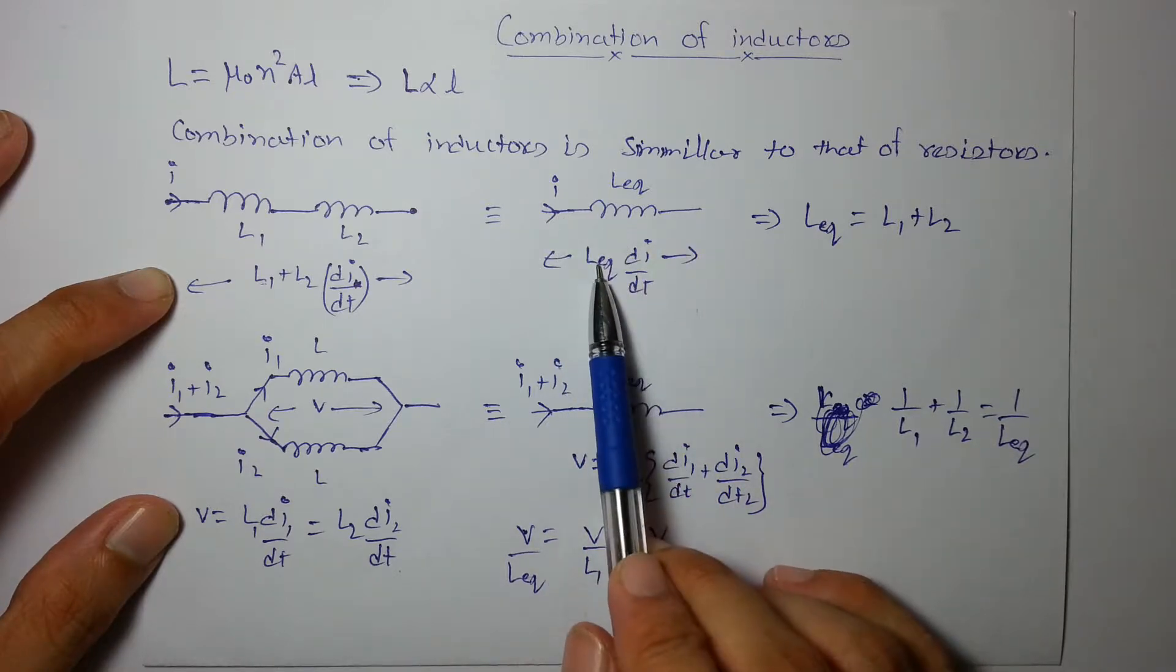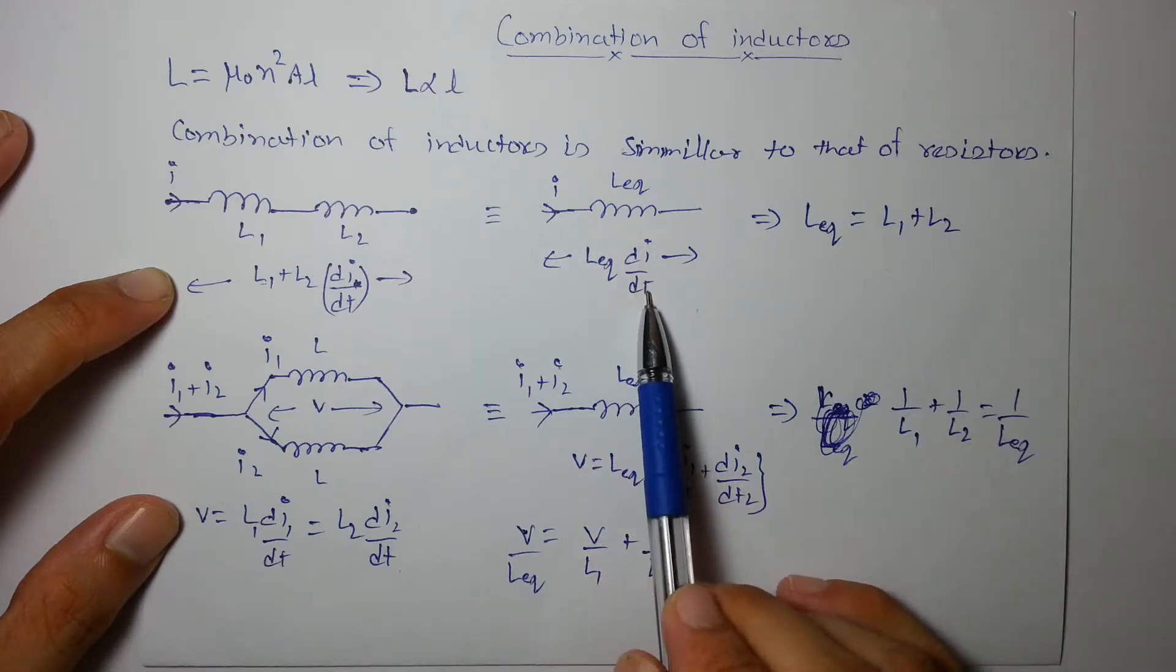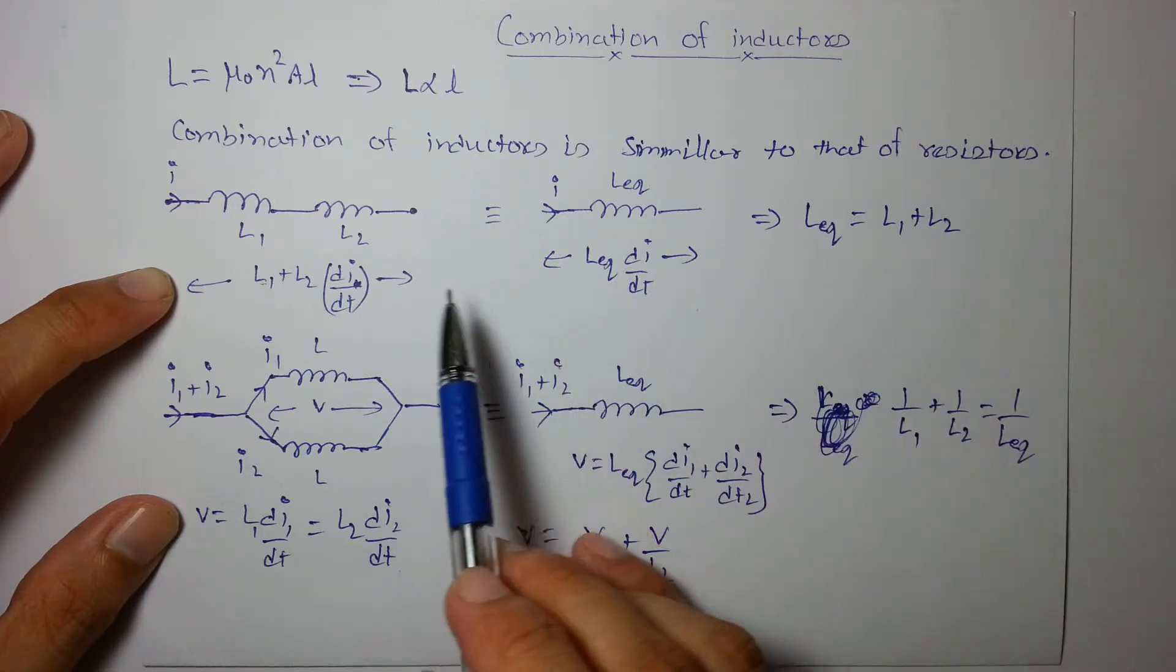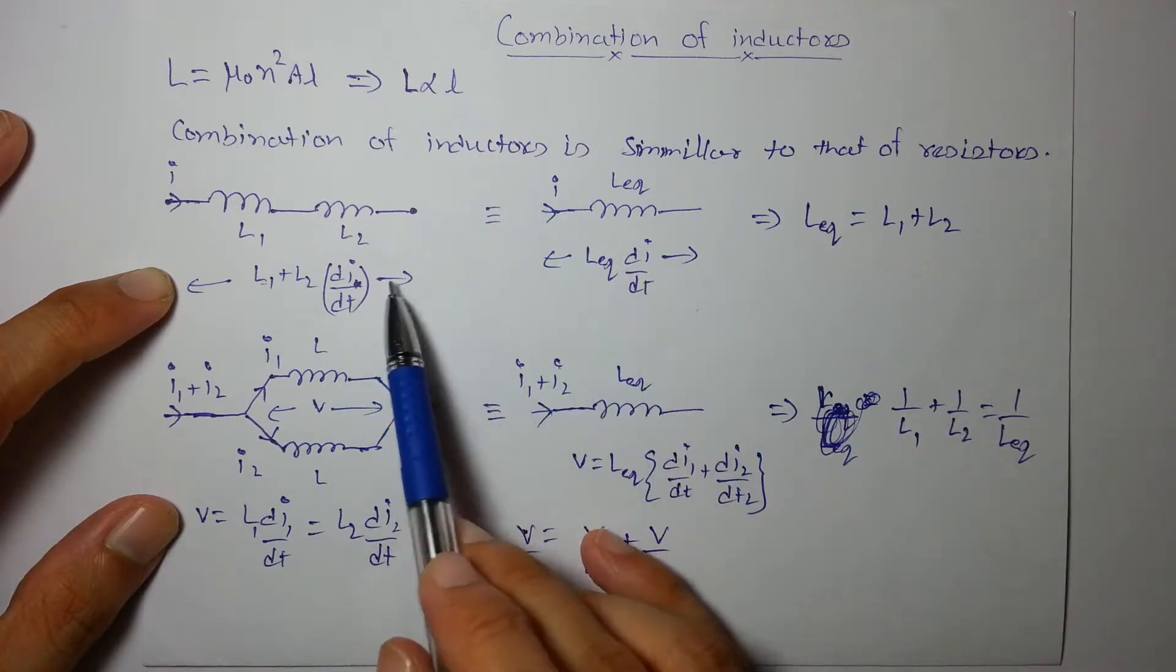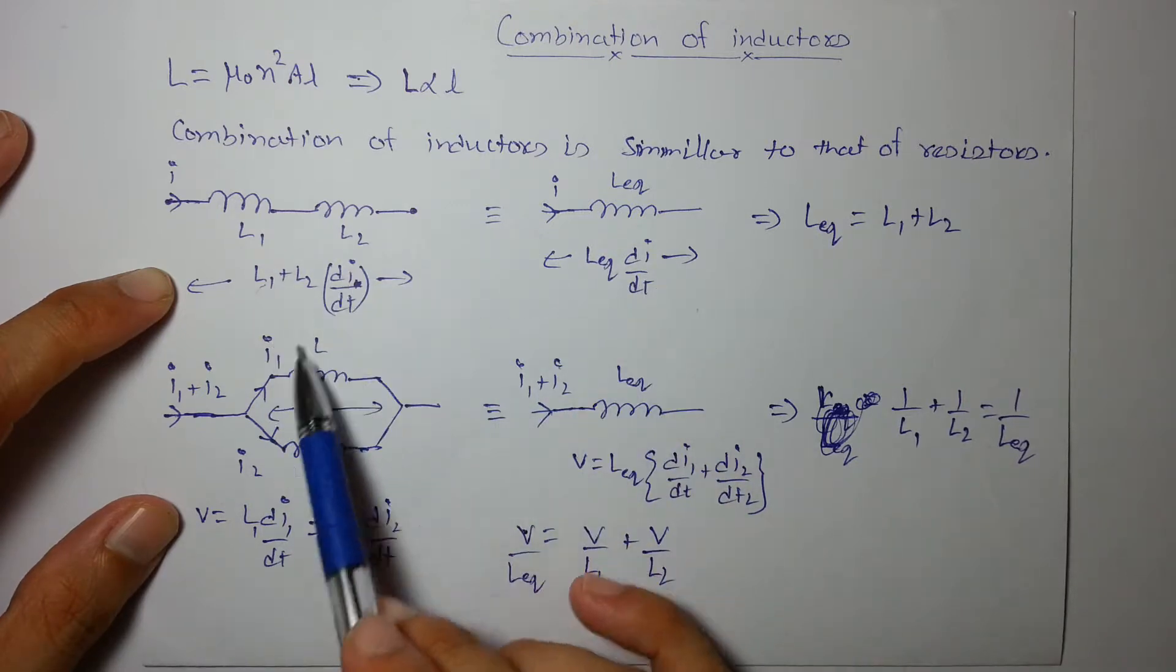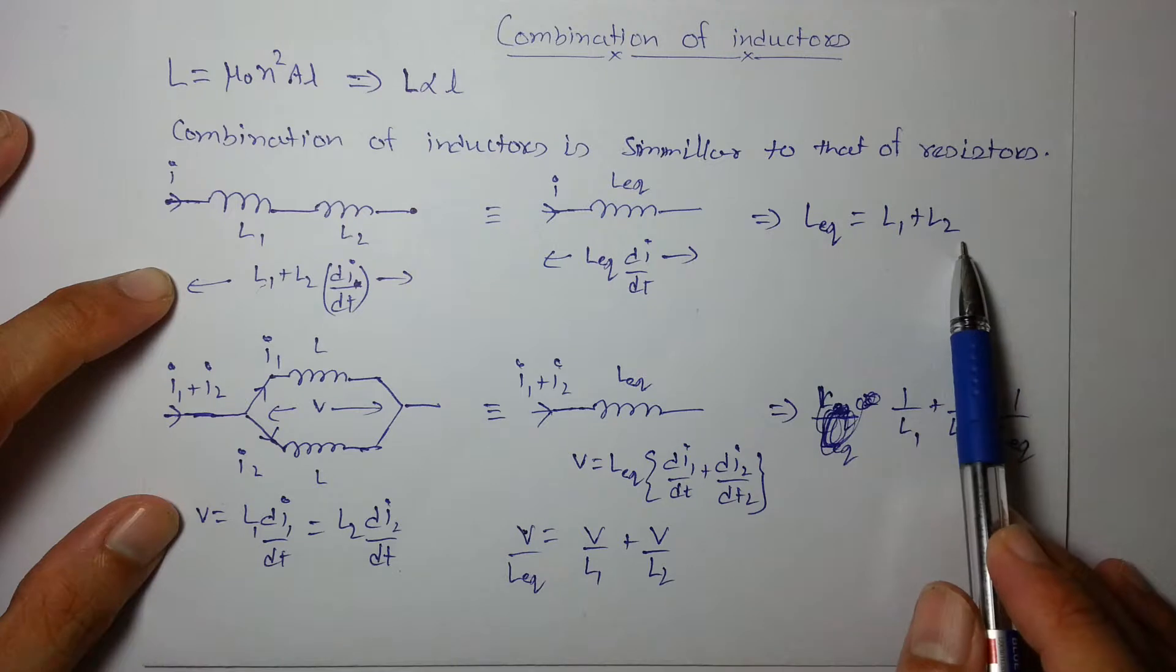Similarly, the L equivalent will have the same current and should have the same voltage, which will be L_eq × di/dt. By equating these two voltages and canceling di/dt, we can say L equivalent is L₁ + L₂.